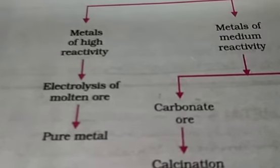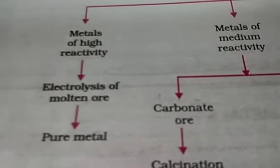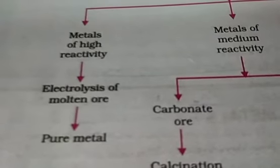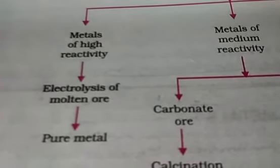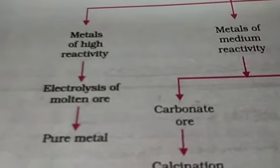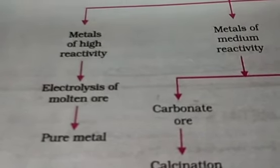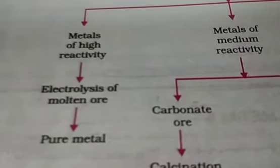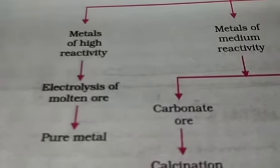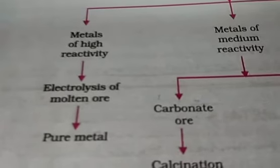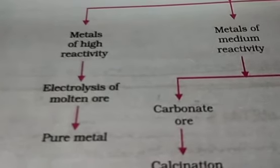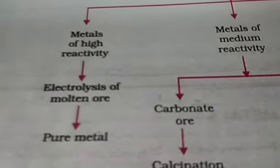You may ask why not use other methods. There is no other way for highly reactive metals - only one method, electrolysis of molten ore, is used by passing of current. It is costly, but to extract highly reactive metals it must be used. By this method we can get the pure metal directly.